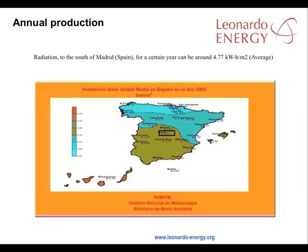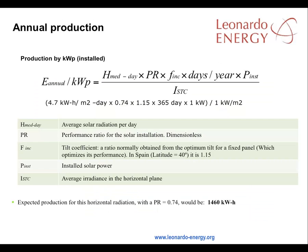We will consider that the radiation in the south of Spain, near Madrid, for a certain year can be around 4.77 kilowatt hours per meter squared on average. Here is a formula to calculate the expected annual production of a solar panel. This is a grid-connected facility. The performance ratio of an off-grid facility would be considerably lower than the 74% used here, as we will discuss in later modules.